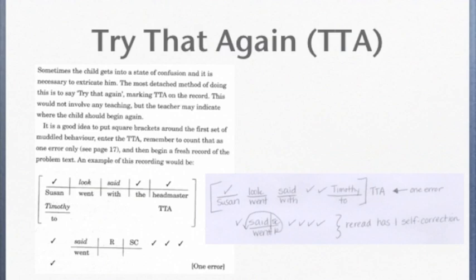Sometimes, these multiple attempts bring the child into a state of confusion and it is necessary to provide some assistance. At this point, say 'try that again' and mark the entire confused part in brackets and TTA for try that again. It is important not to do any teaching during this time, but you may indicate to the child where they should begin again. When the child re-reads and tries that part again, record the fresh start below. The entire bracketed muddled part is only counted as one error.